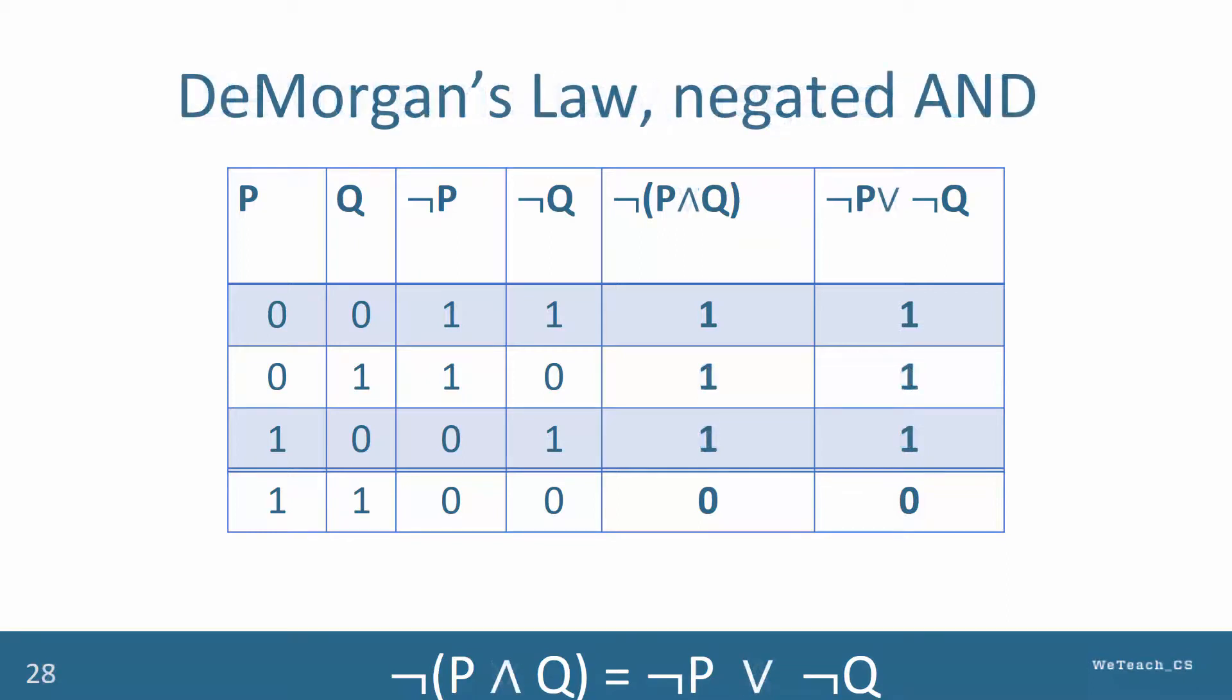Here you can see another truth table showing proof of the negated AND version of De Morgan's Law. Again, look over it carefully to see how the final two columns match, pausing the video as necessary.